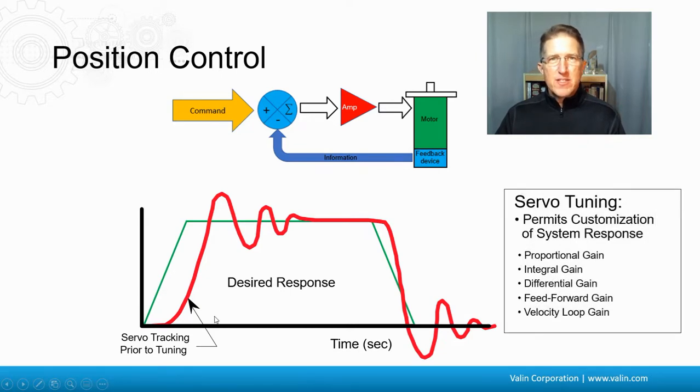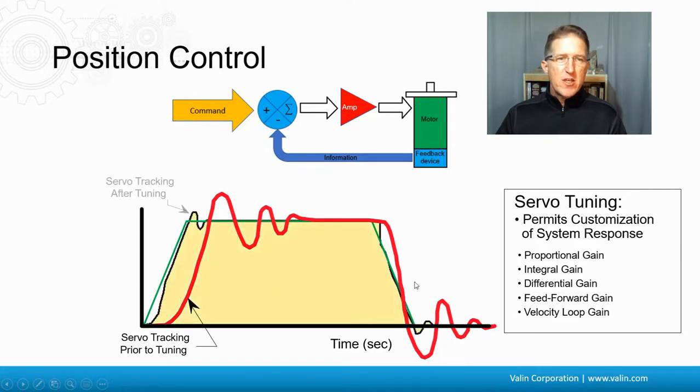Now, a servo system needs to be tuned. Now, it might have tuning in it by default, but it has to be tuned. And it permits the customization of that system response by tuning the algorithms. Because you might want to prioritize a high responsiveness versus settling time. Something like that. So there's several different gains in the servo system, typically, that need to be tuned. And once you adjust those parameters, you might get a better response here, where there's only a little lag time here, a little overshoot.